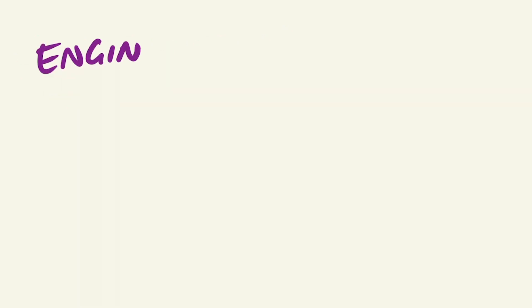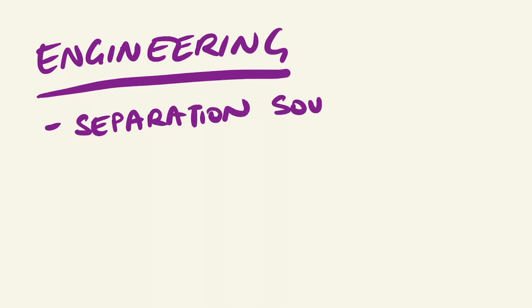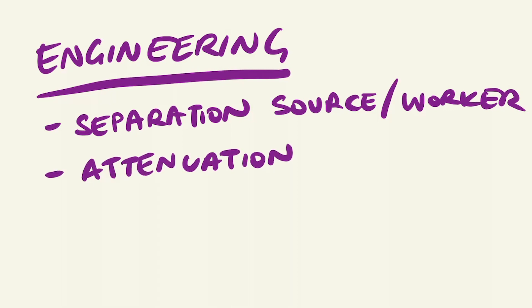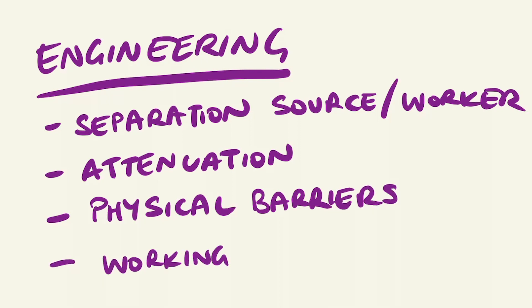Engineering controls are generally the most effective way to implement noise exposure control in the workplace. This would involve separation between the source and the worker. As increasing the distance between the receiver and source is important for the attenuation of sound. Physical barriers can include enclosing the source using materials which absorb sound, or adding modifications which can dampen sound. Changes in work designs can also be implemented for workers to control machinery remotely at a safe distance.